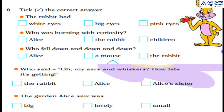Now tick the correct answer. Some options are given to you. First question: the rabbit had white eyes, big eyes, or pink eyes? The correct answer is the rabbit had pink eyes.